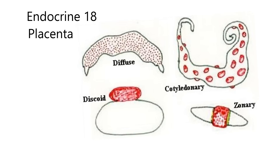Zonary is the third type — dogs and cats have this, where the zone is completely around the placenta and all those red areas attach to the uterine wall. Fourth is cotyledonary — ruminants like goats, sheep, and cattle have this, with relatively large areas the size of your thumbnail or bigger attached to the uterine wall.